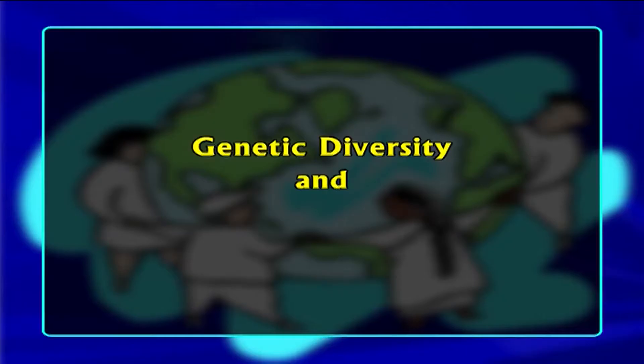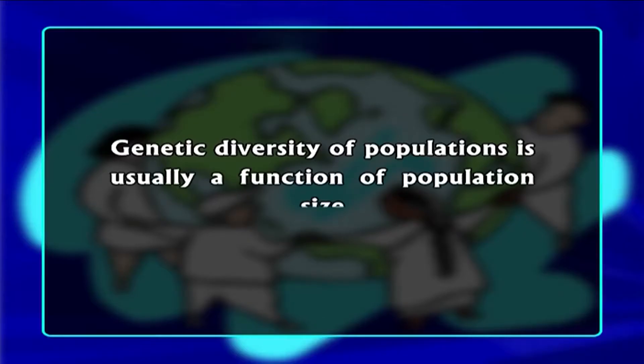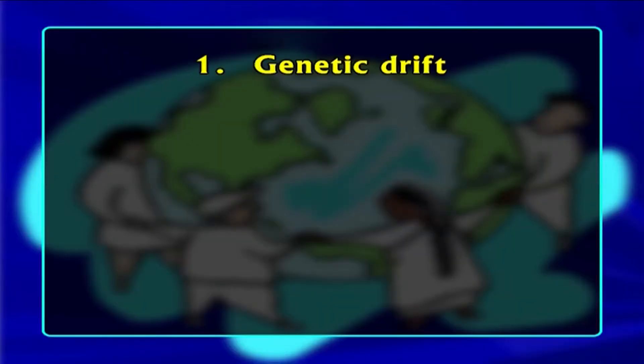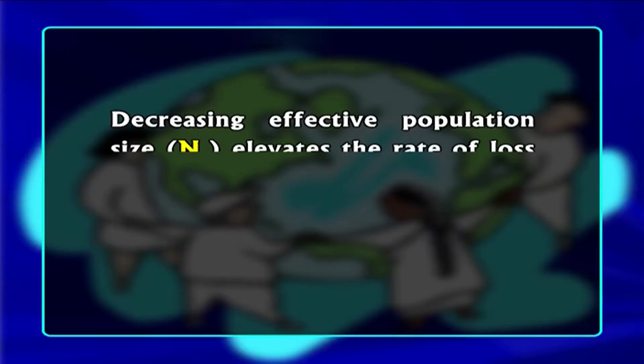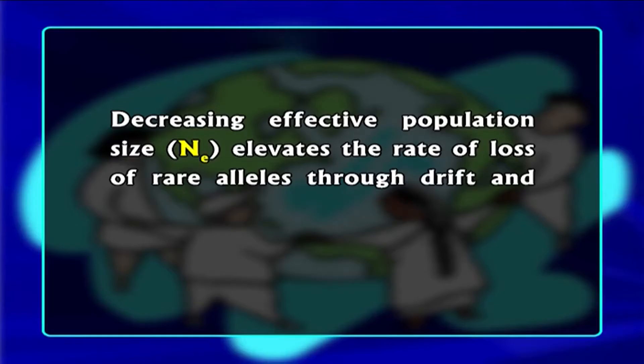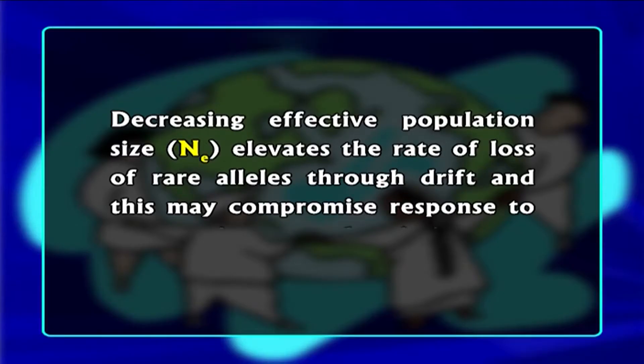Now let us discuss genetic diversity as a function of population size. The genetic diversity of populations is usually a function of population size. Genetic diversity is lower in small populations primarily because of the following reasons. First, genetic drift — that is, the change in the gene pool of a small population due to chance events. Rare alleles occur at low frequencies because they may not be adaptive, though they could become adaptive if selective pressure changes. Decreasing effective population size (Ne) elevates the rate of loss of rare alleles through drift, which may compromise response to environmental variations.